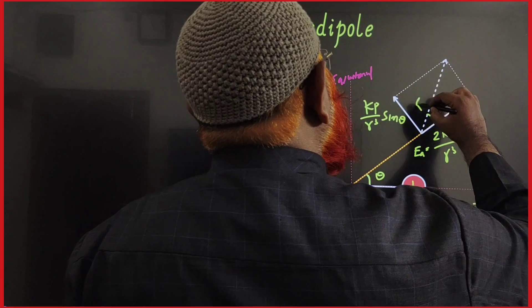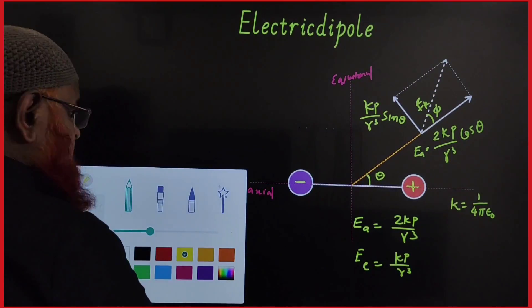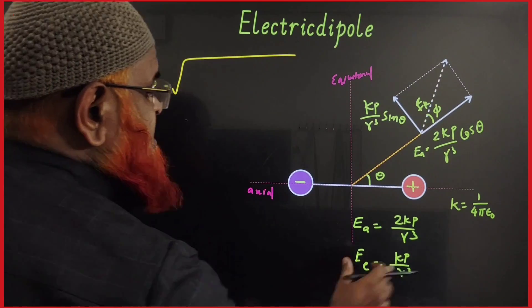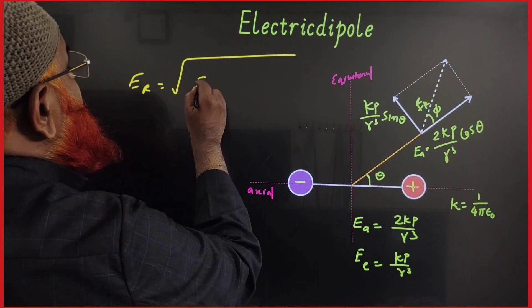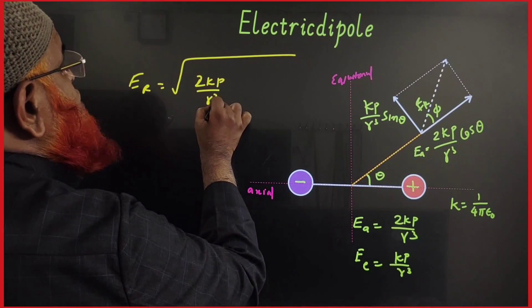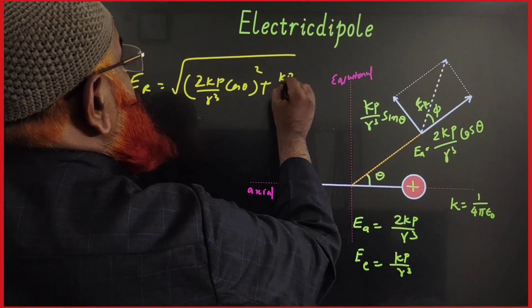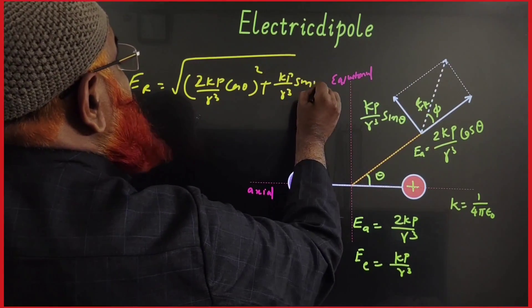Now you have to find out the resultant. In this direction, you have to find out the resultant. So how are you going to find out this resultant here? So resultant is nothing but you have to apply the Pythagorean theorem. You have to consider here 2kp by r cube cos theta whole square plus this side, kp by r cube sin theta whole square.